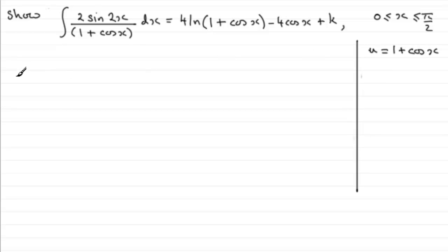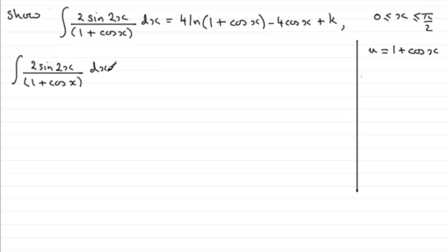So how do we go about something like this? Well, first of all, we need to put down our integral: 2sin(2x) all over (1 + cosx). Now, this sin(2x) I'm going to change to 2sinx·cosx — you should be familiar with the double angle formula, often written as sin(2a) = 2sin(a)cos(a). So your a is the x in this example.